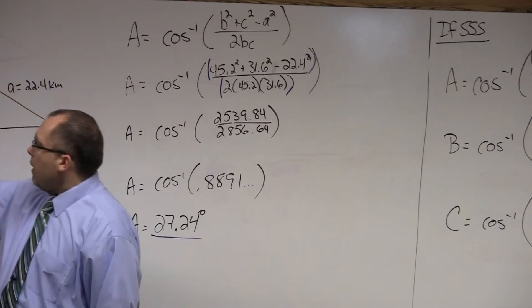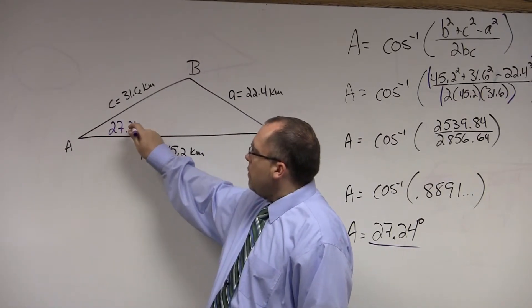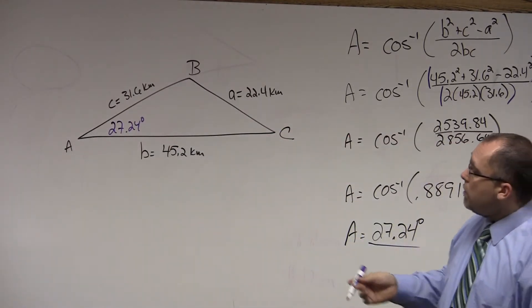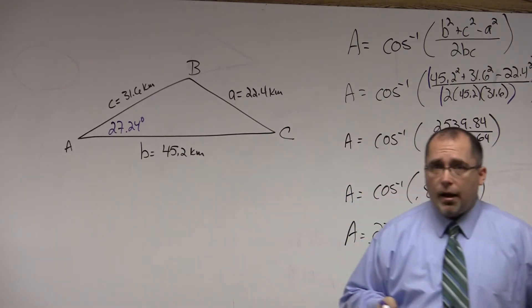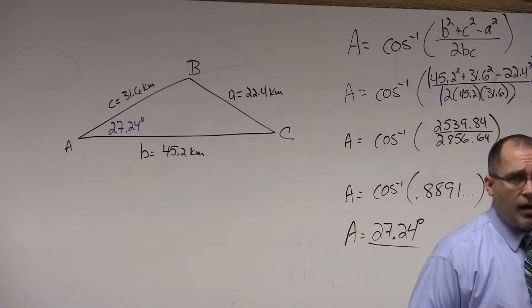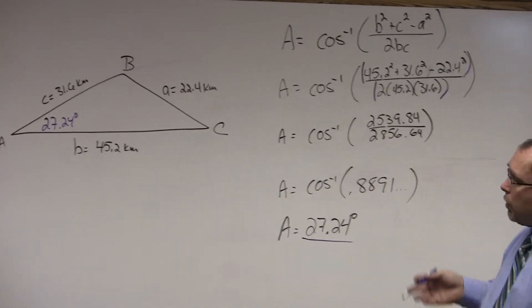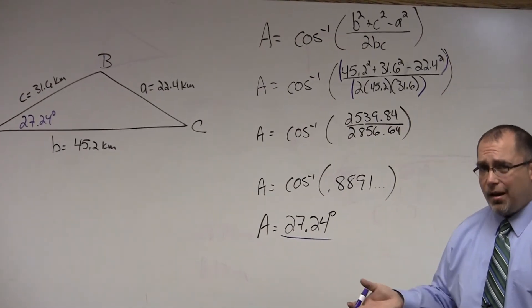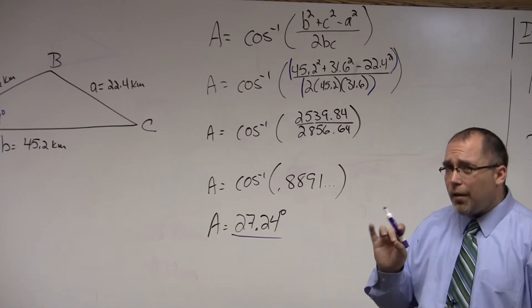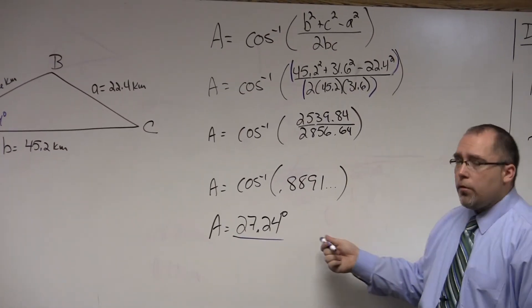And now that we have angle A, we have options. We could, now that we have a matched pair, use the law of sines, but again, we're solving for an angle, whether it be angle B or C. I'd rather you use the law of cosines. Because again, you're going to end up with a special case using the law of sines for an angle. For a side, you're fine using the law of sines, but for an angle, you can have special cases. I'd rather you use the law of cosines.